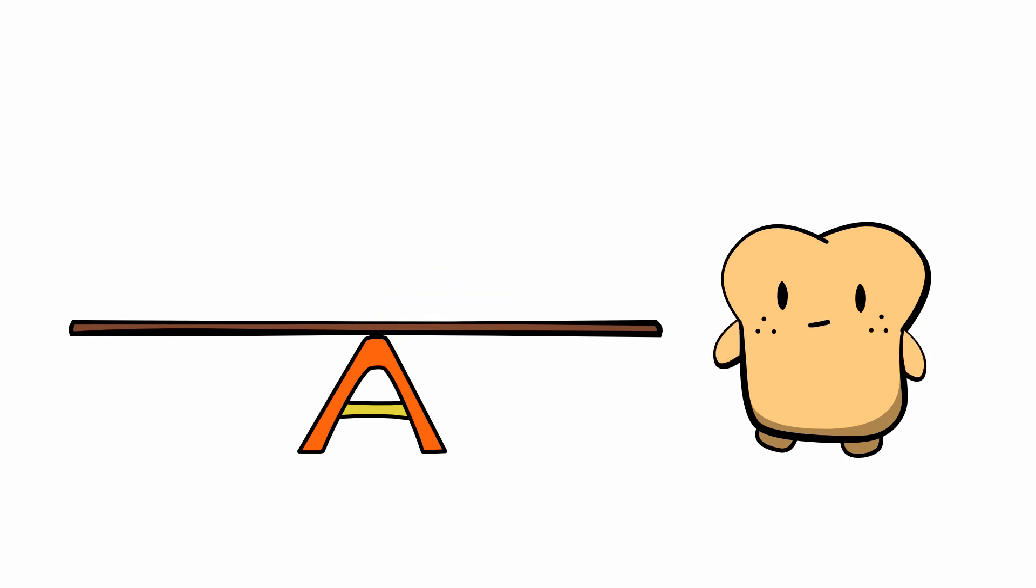So, if all levers have these two parts, the rigid bar and the fulcrum, how could they possibly act differently? I mean, a lever is a lever, right? Well, that's true, but we can categorize them based on how they're used.